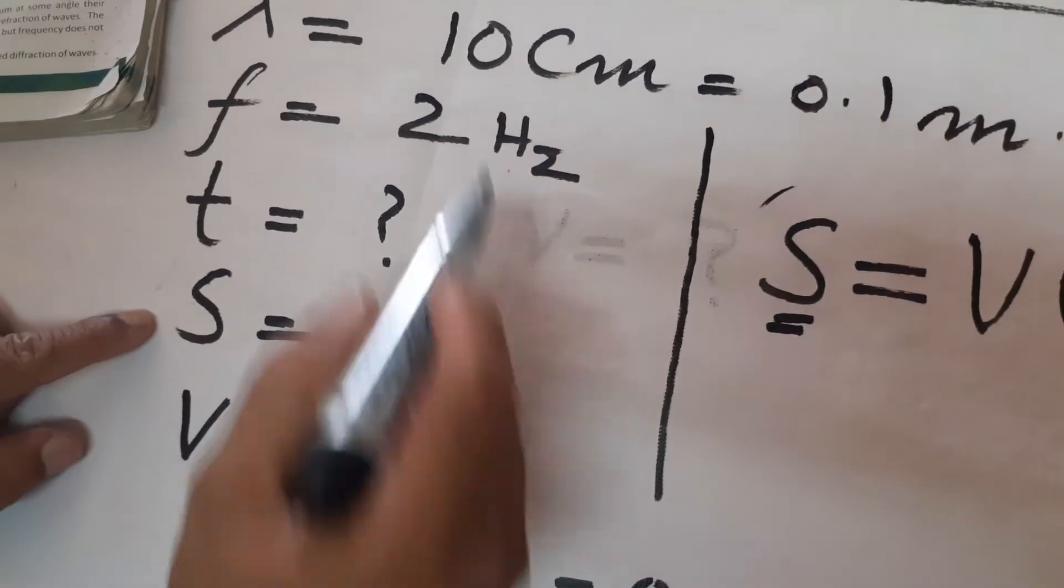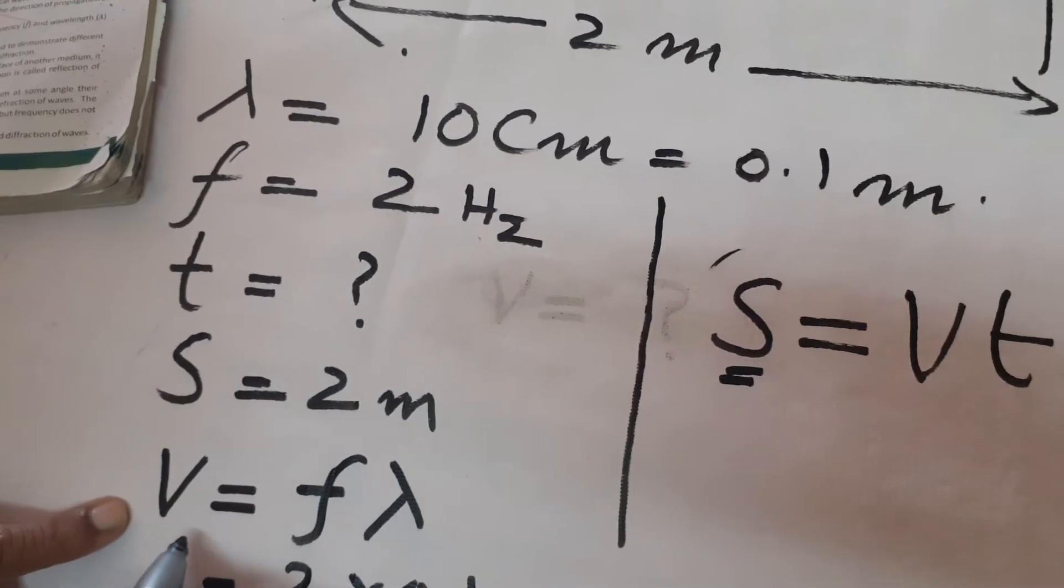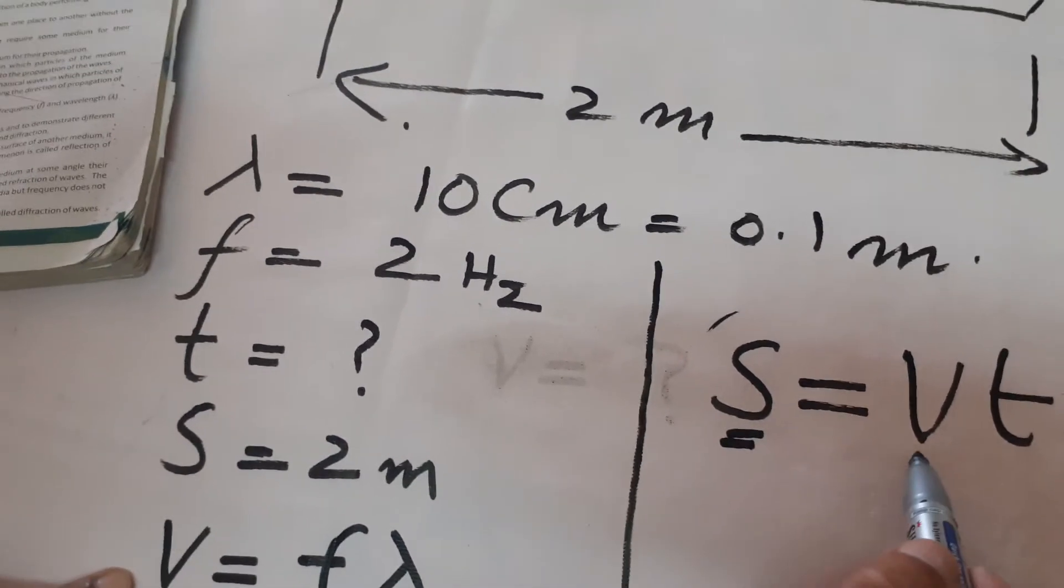s is equal to 2 meters. We will use the given values to find the velocity.